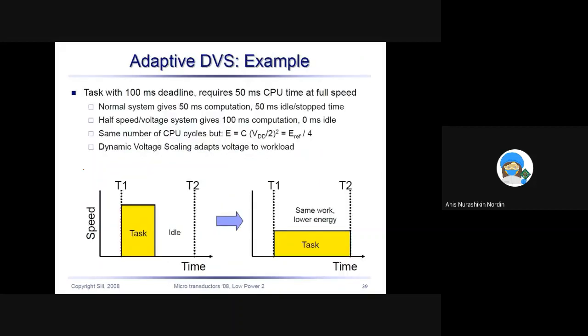This is the example. For example, if you're doing a task and the task doesn't need so much computation, you can make the speed of the tasks lower so that you have lower energy. You consume lower energy by reducing the speed, and therefore the power will be reduced.